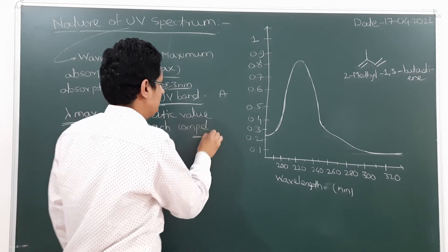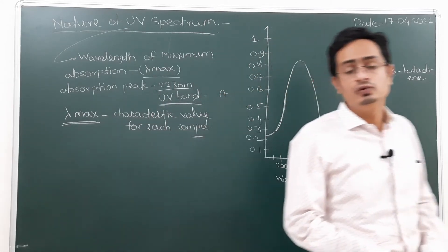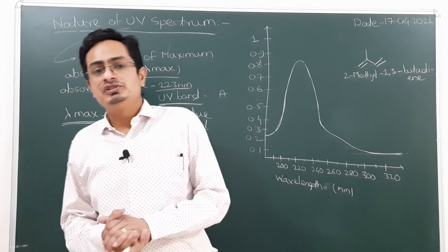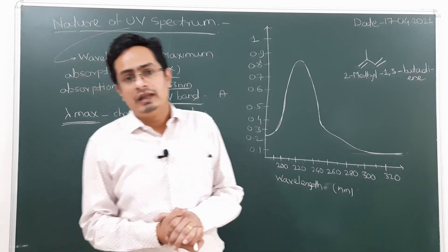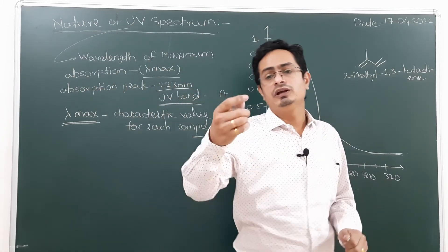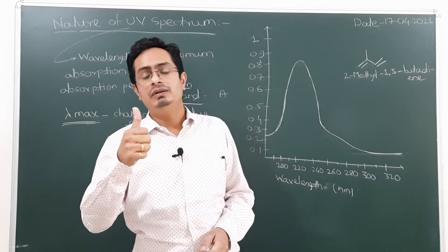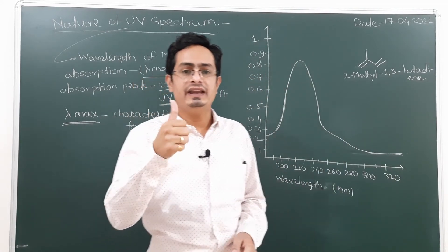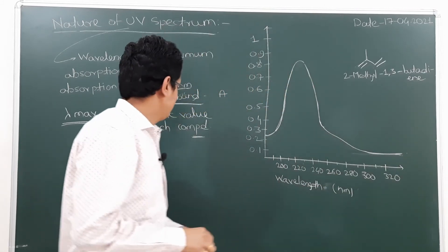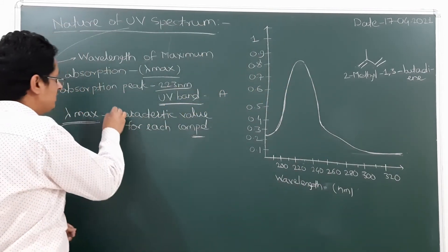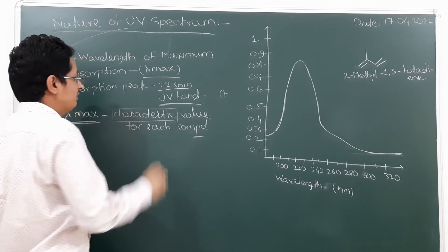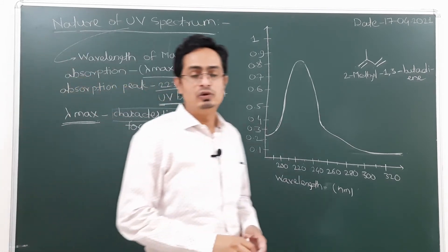The lambda max value is the characteristic value for each compound. Every compound has its own lambda max value, which acts as an identity or characteristic feature of that organic compound.